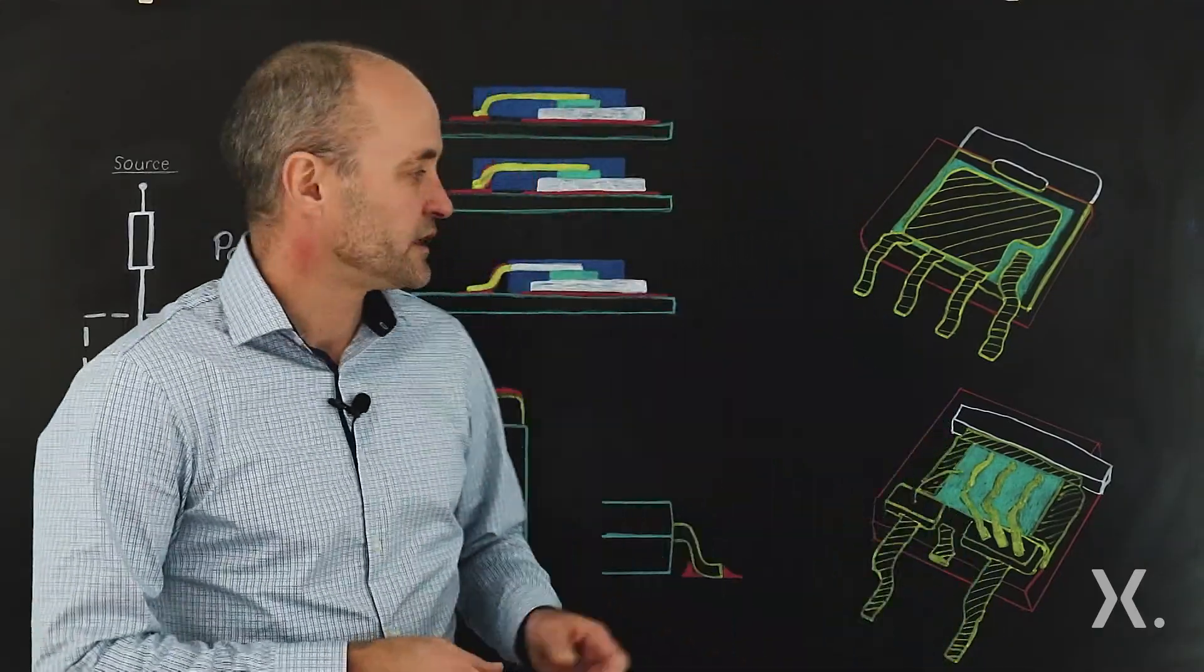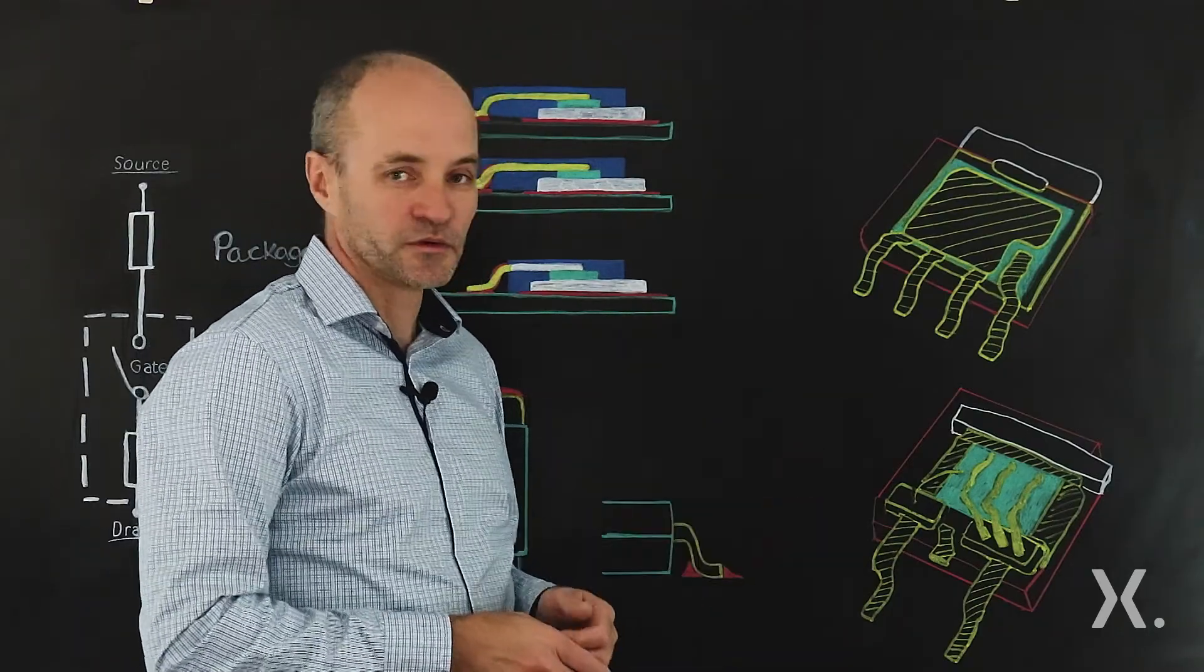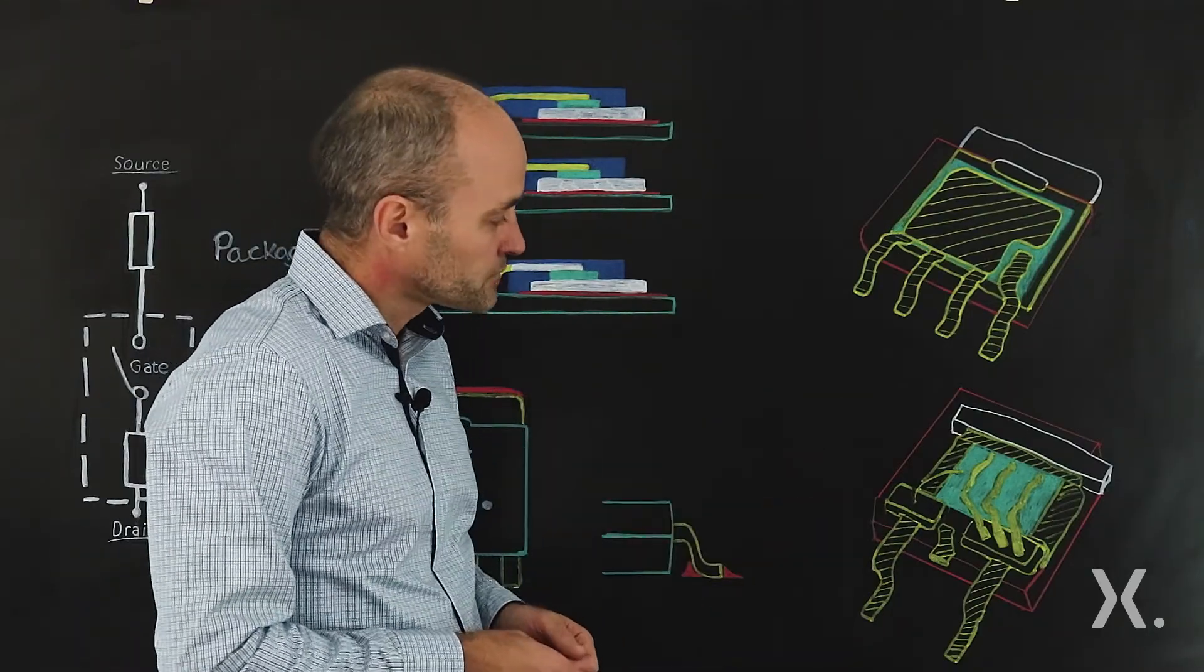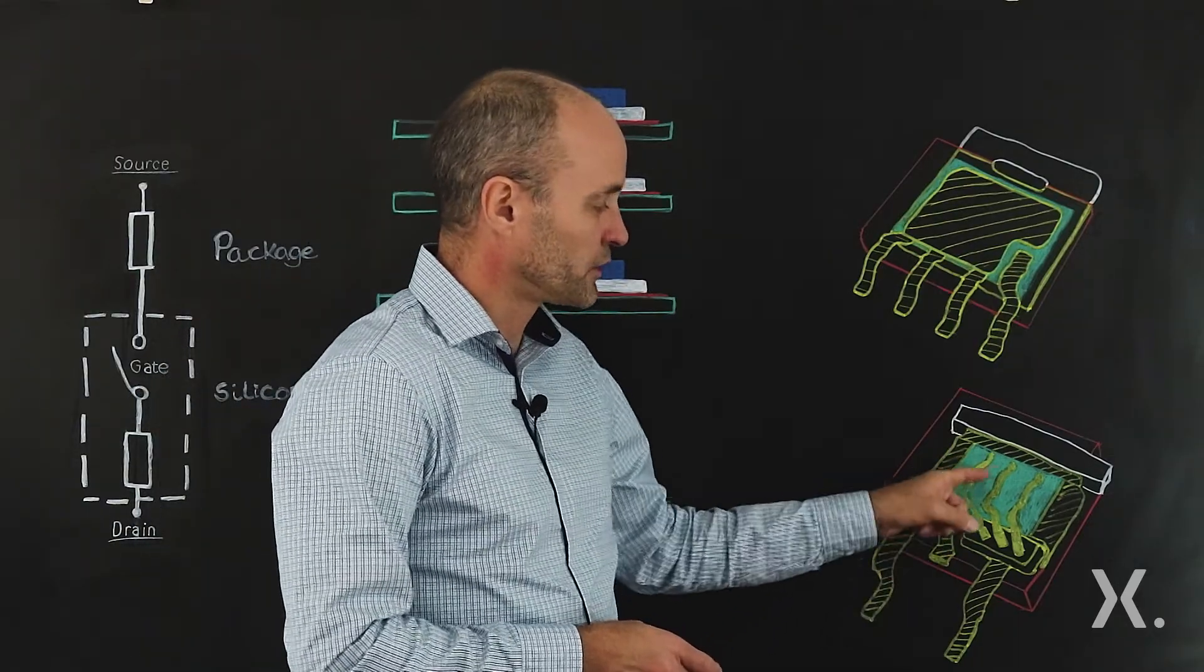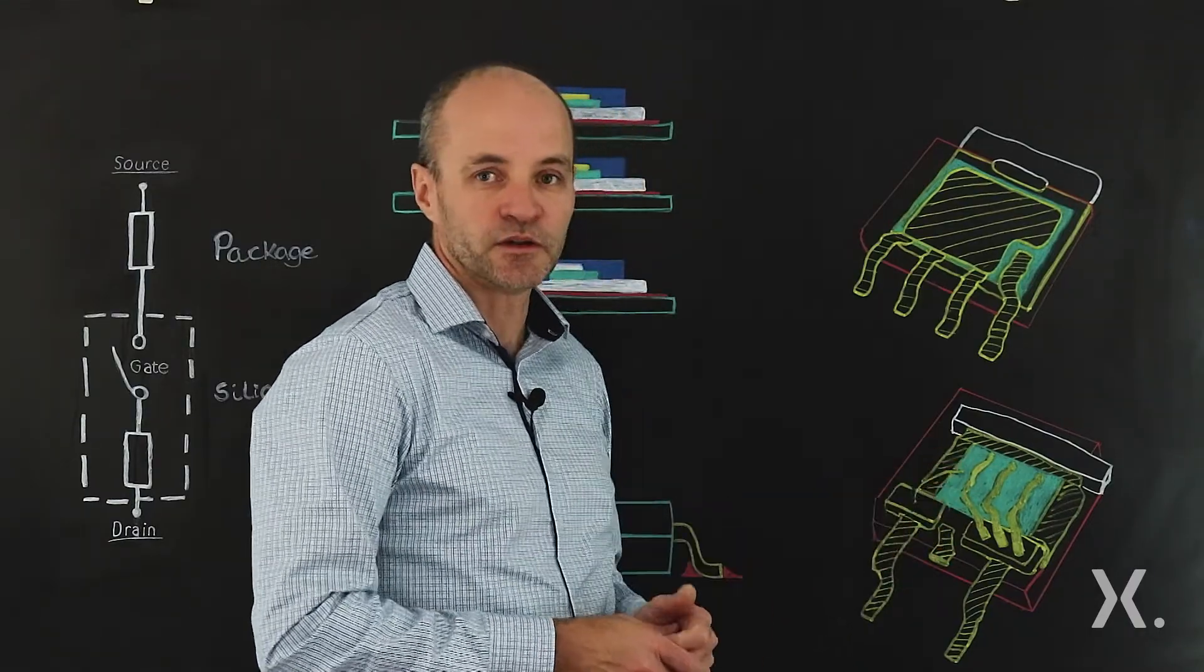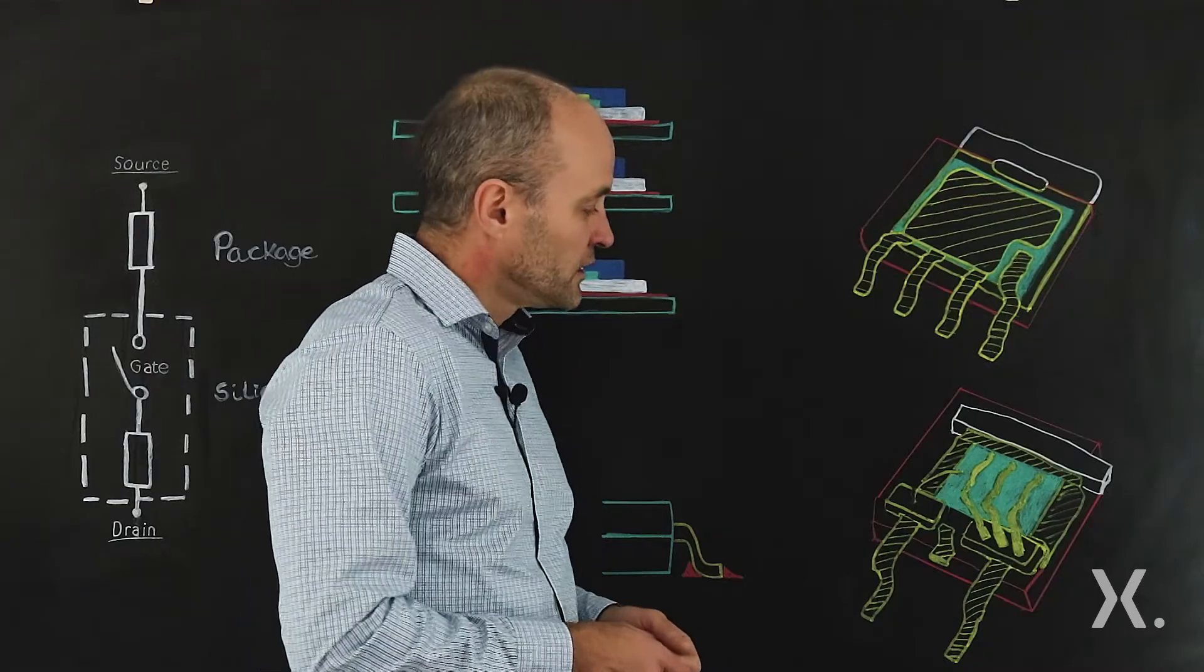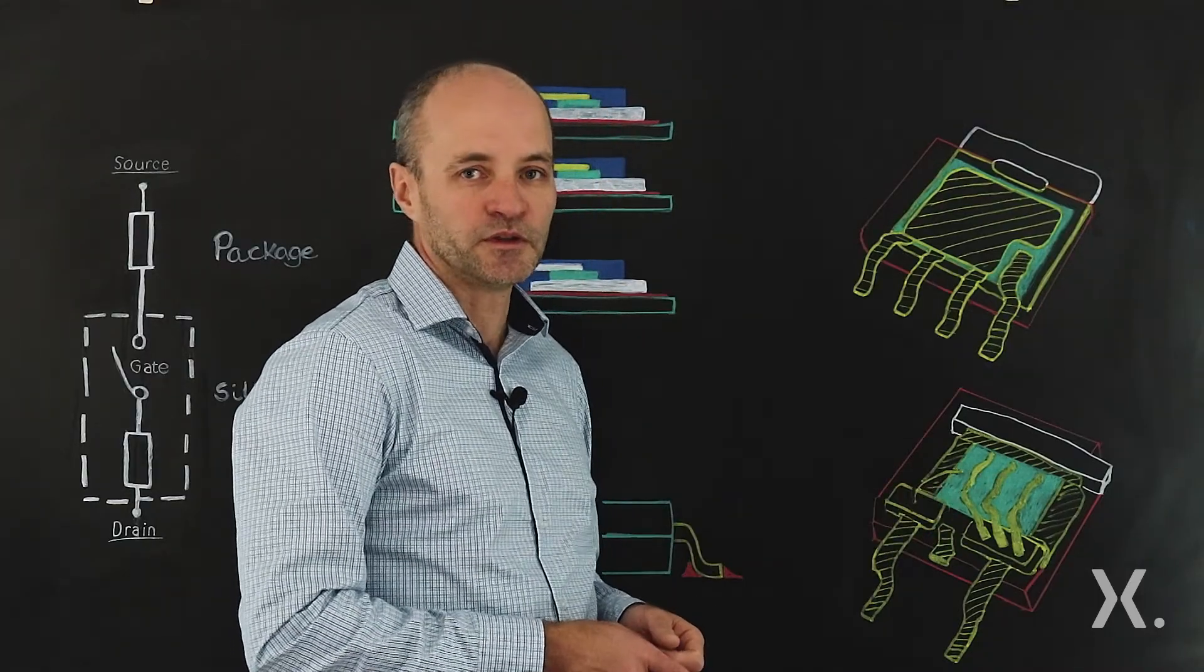If we look at traditional wire-bonded packages such as D2PAC or D-PAC, a big part of the resistance of the package is actually made up by the bond wires. In this case we have three bond wires that are stitch bonded to the top connection of the die, and this is about as optimal as you can get for wire-bonded packages.